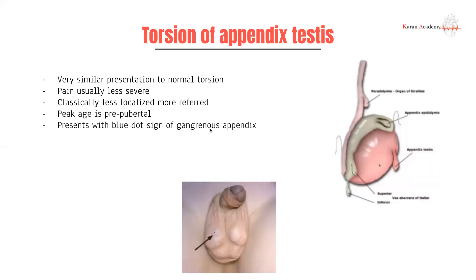Next, we have torsion of the testicular appendix, or the appendix testes. It presents quite similarly, but often the pain is not as severe, and they may still have an intact cremasteric reflex. The appendix testes can rotate quite freely because there is no gubernaculum fixing it. The pain tends to be less localized and more referred to the lower abdomen. Peak age is pre-pubertal. They can present with a blue dot sign, which is a sign of the gangrenous appendix.